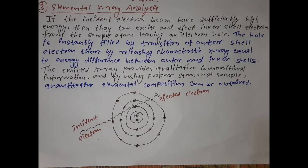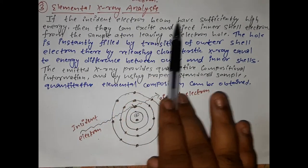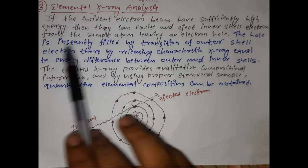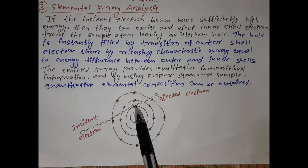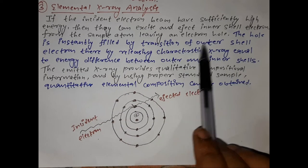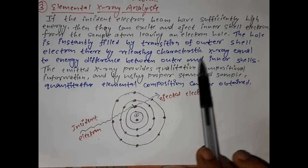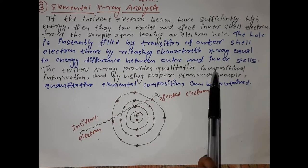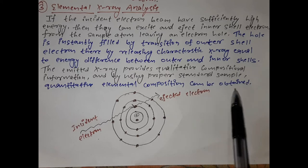The third imaging scheme is elemental X-ray analysis. If the incident electron beam has sufficiently high energy, it can excite and eject an inner-shell electron from the sample atom, leaving an electron hole. This hole is instantly filled by the transition of an outer-shell electron, thereby releasing a characteristic X-ray equal to the energy difference between the outer and inner shell. The emitted X-ray provides qualitative compositional information, and with proper standard samples, quantitative elemental composition can also be obtained.